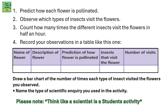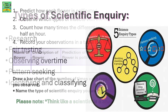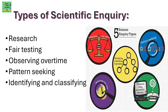Name the type of scientific enquiry you used in the activity. Types of scientific enquiry: research, fair testing, observing over time, pattern seeking, and identifying and classifying.